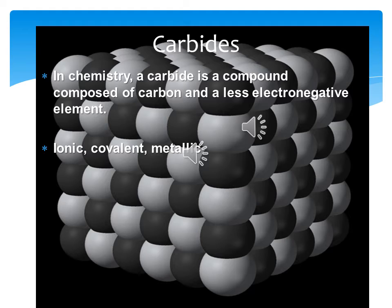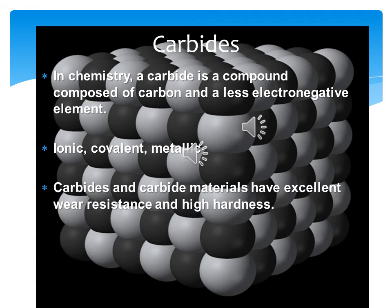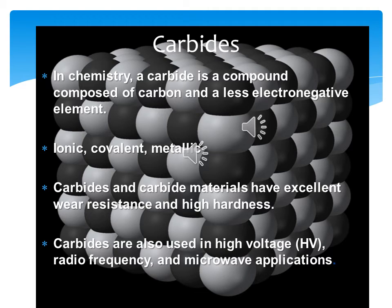Now we are going to talk about carbides. In chemistry, a carbide is a compound composed of carbon and less electronegative elements. Usually, carbides are divided into three categories: the ionic carbide, the covalent carbide, and the metallic carbide. Carbides and carbide materials have excellent wear resistance and high hardness — they are sometimes referred to as hard metals. Applications include wear parts and tooling, chemicals and material processing, building and construction, and walls and roofing. Carbides are also used in high voltage radio frequencies and microwave applications.